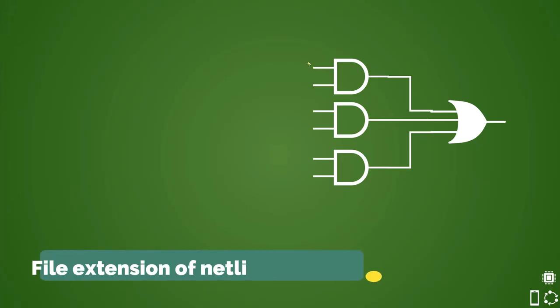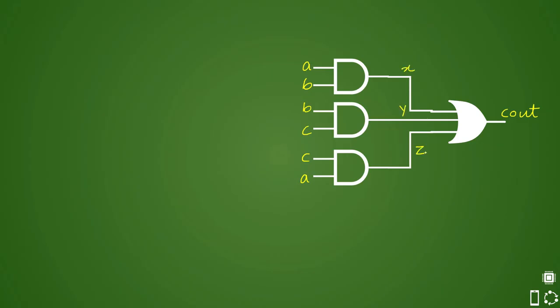Let us assume that these inputs are a, b, and c. Let us assume further that your output is c_out and there are three wires in between. These wires are x, y, and z, and let's assume that these gates have names.